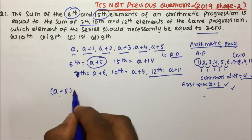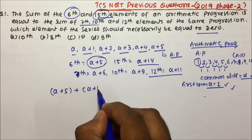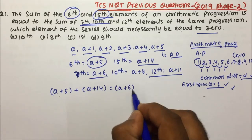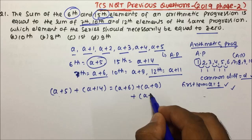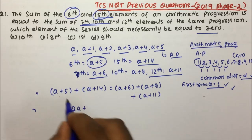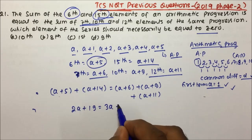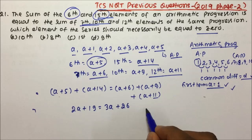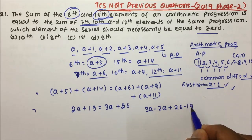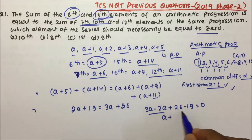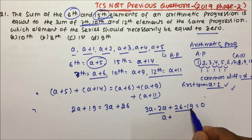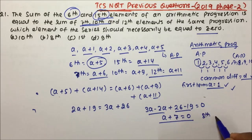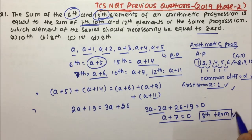The 6th term is a+5 and the 15th is a+14. Their sum equals the sum of the 7th (a+6), 10th (a+9), and 12th (a+11) terms. So: 2a+19 = 3a+26. Rearranging: a+7 = 0. Since a+7 represents the 8th term (because the nth term = a+(n−1), so the 8th term = a+7), the 8th term equals 0.